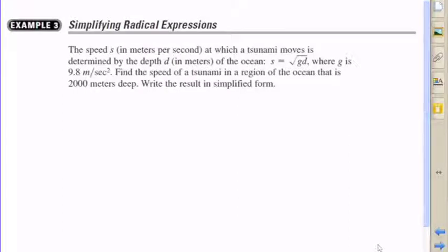s equals the square root of gd, where g is 9.8 meters per second squared. Find the speed of the tsunami in a region of the ocean that is 2,000 meters deep. Write the result in simplified form.